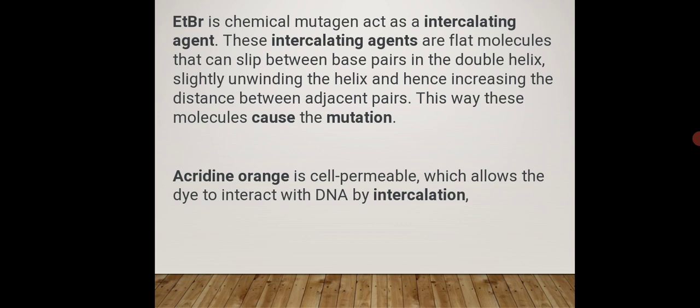In the syllabus, two examples of intercalating agents are given: ethidium bromide and acridine orange. The function of these agents is the same — they insert themselves into the DNA strand, disrupt the helix, and may add or delete nucleotides, disrupting further processes and resulting in frameshift mutation.